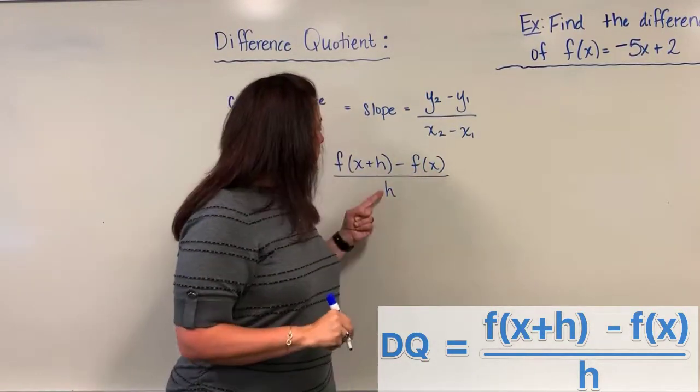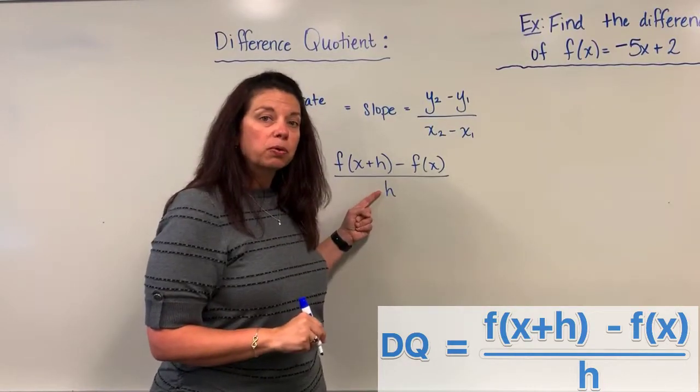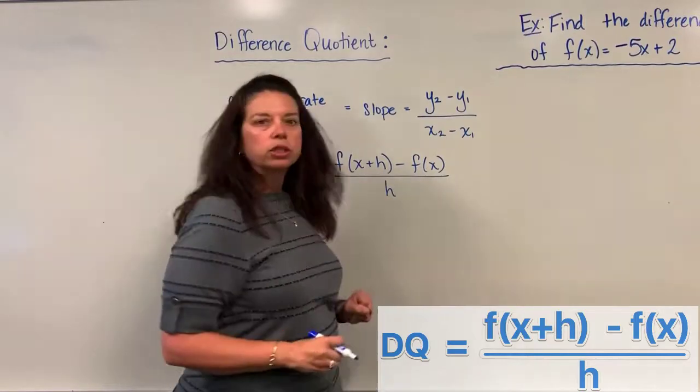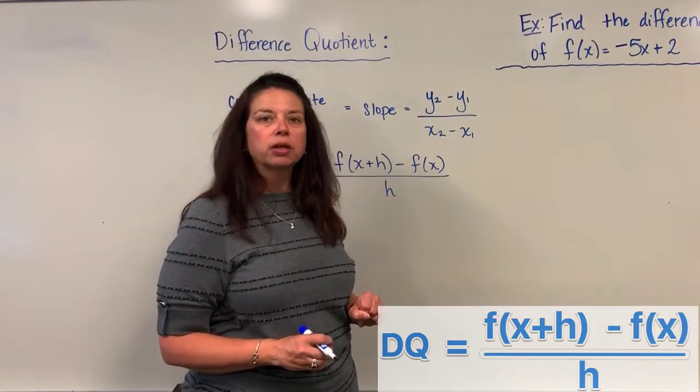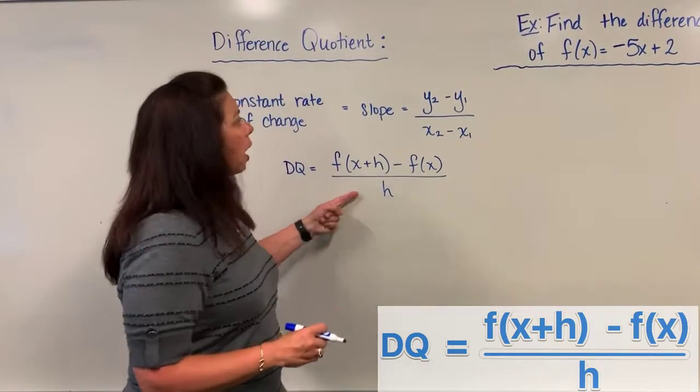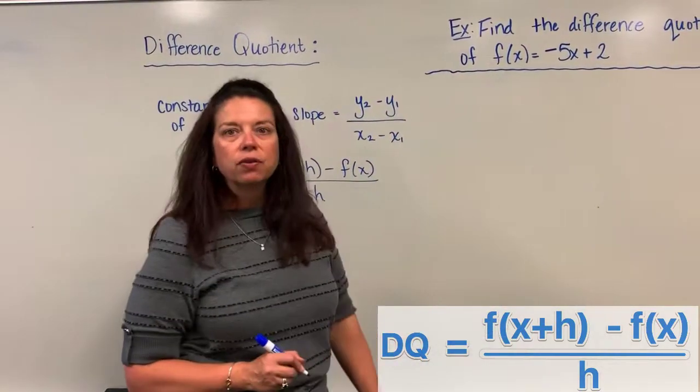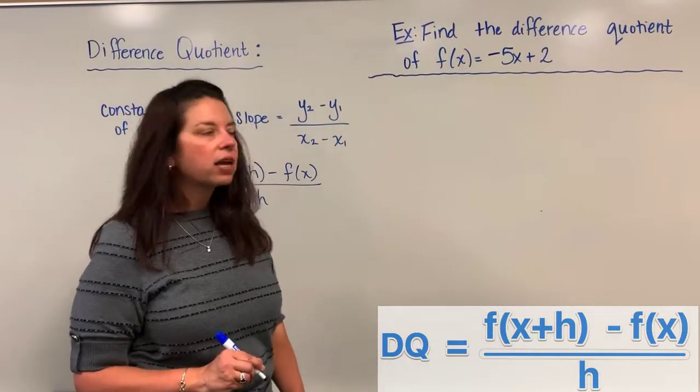In a later video we will actually talk about and explore the meaning of what this h is here, but for right now we're just going to get our way through the algebra part of this difference quotient. So I will start with finding the difference quotient of a linear function f of x equals negative 5x plus 2.